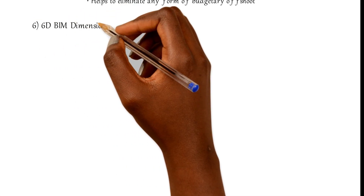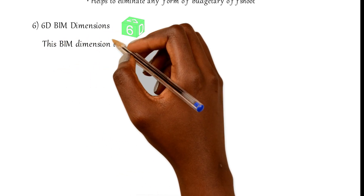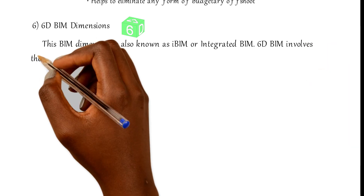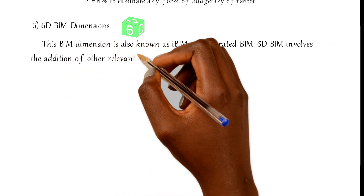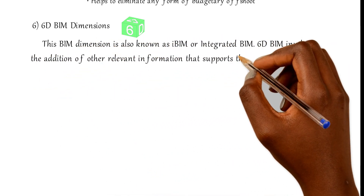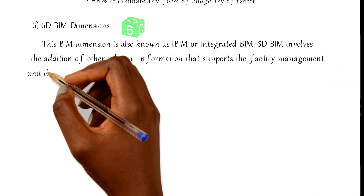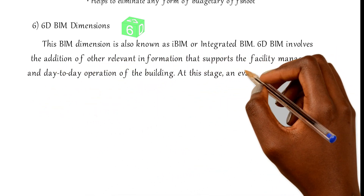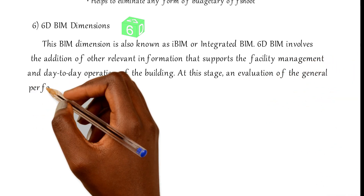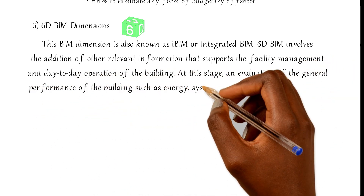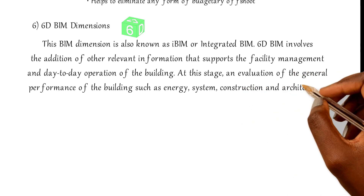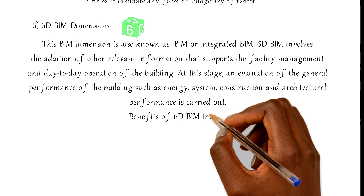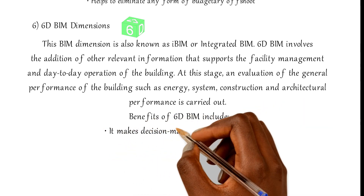Number six: 6D BIM dimensions. This BIM dimension is also known as iBIM or Integrated BIM. 6D BIM involves the addition of relevant information that supports facility management and day-to-day operation of the building. At this stage, an evaluation of the general performance of the building — such as energy, system, construction, and architectural performance — is carried out.